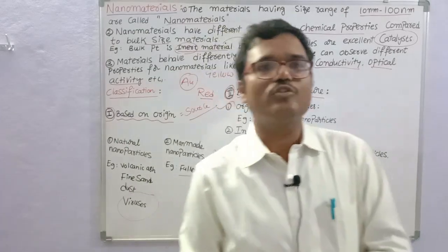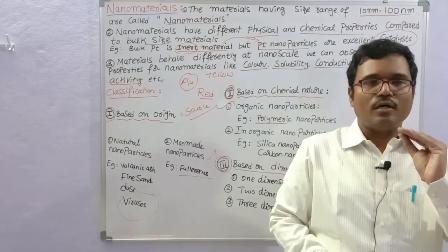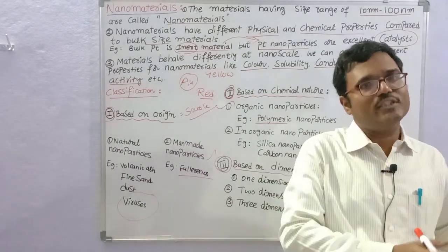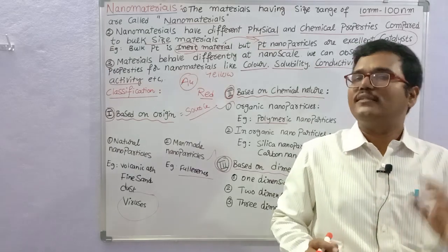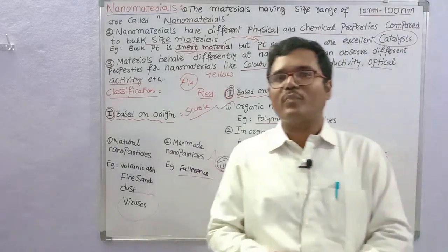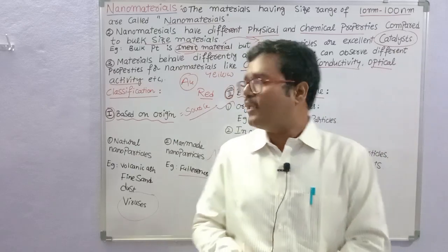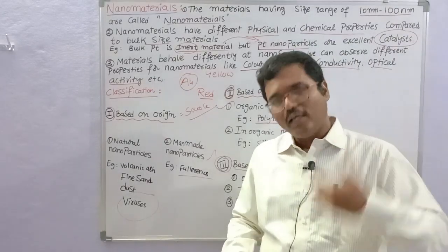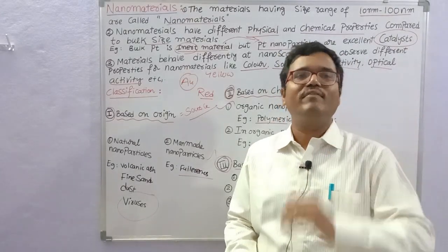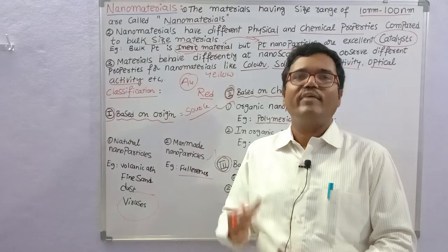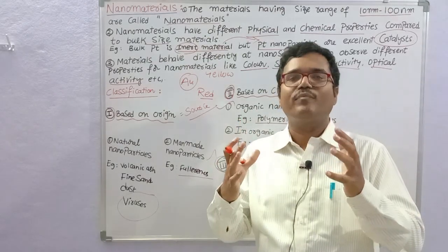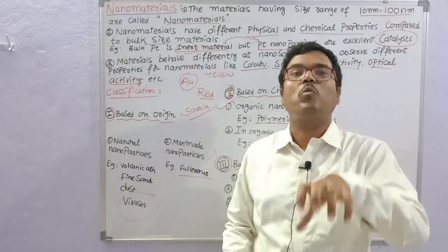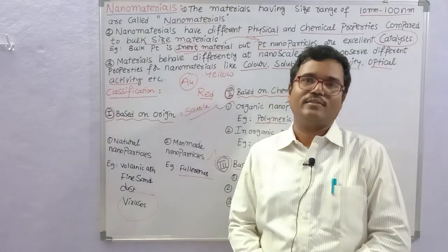Any material that is reduced to the nanoscale range shows altered properties — it does not show the properties of its parent bulk material. Properties like conductivity will change, color will change, optical activity will change, physical properties will vary, chemical properties will vary, and catalytic activity will change. So we can engineer certain nanomaterials for specific roles — that is the importance of nanomaterials.